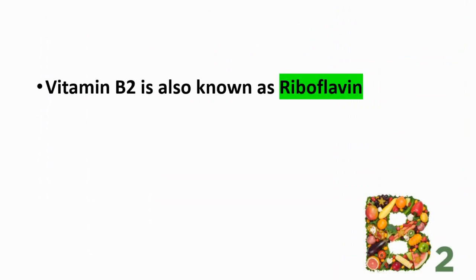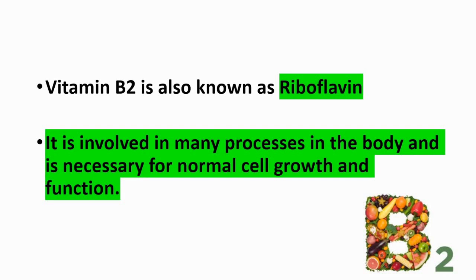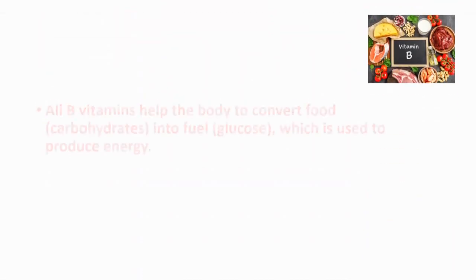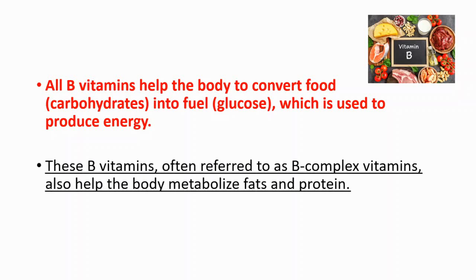First of all, vitamin B2 is also known as riboflavin. It's involved in many processes in the body and it's necessary for normal cell growth and function. All B vitamins help the body to convert food into fuel — carbohydrates into glucose — and this process is used to produce energy. These B vitamins, often referred to as B complex vitamins, also help the body metabolize fats and protein.